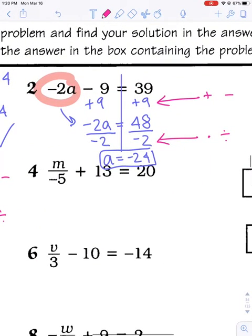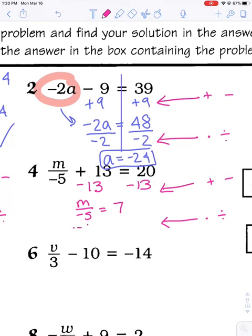All right. Number 4. So I know I'm going to need to add or subtract first. And then I need to multiply or divide. I need to get rid of this 13. I'm working my way into the x. The negative 5 is too close to the x for me to work with it yet. I have to get rid of that 13 first. I'm left with m over negative 5 equals 7. 20 minus 13 is 7. Now I need to multiply or divide. Multiply both sides by negative 5. Remember when you're multiplying or dividing, you keep the same sign so it cancels out. And you get m equals negative 35.